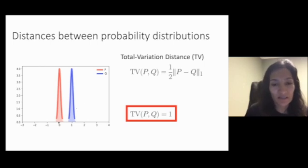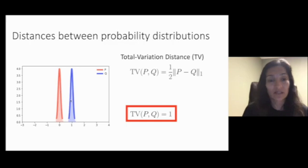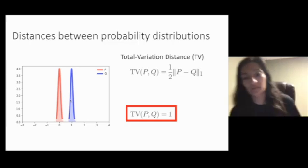Suppose you had these two probability distributions, P in red and Q in blue. Because they don't have any support in common, if you subtract everywhere where P is positive from Q, then you'll get all of P integrated. And this integrates to one. Same with Q. So if you add those up and multiply it by a half, you get one as the distance between these two probability distributions. And you always get that when the distributions have disjoint support.